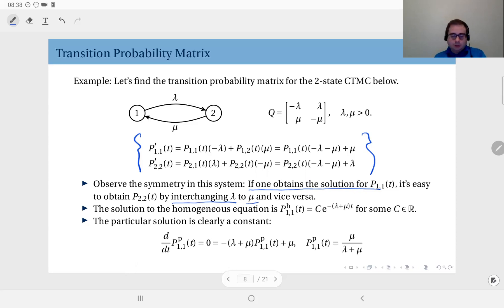Why? Because, well, if you just change state 1 to 2 and 2 to 1, and if you exchange lambda and mu, you get the same system. It's a symmetrical system in that sense.